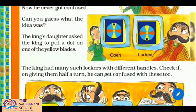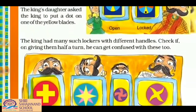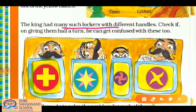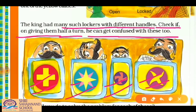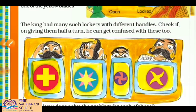The king's daughter suggested putting a dot on one of the yellow blades. Now the king had many such lockers with different handles. For these too, both open and locked positions look the same, so we need to put a dot on the blades to identify whether each locker is locked or unlocked.